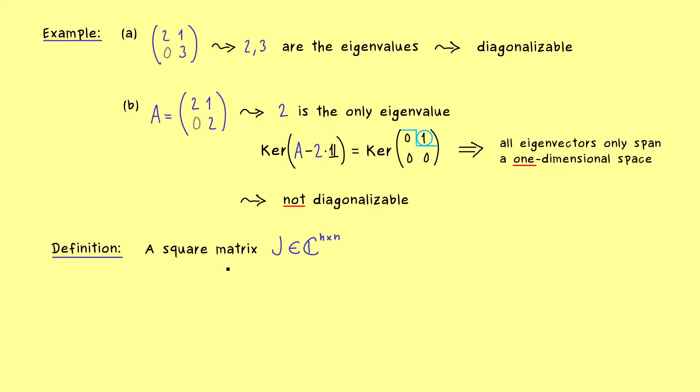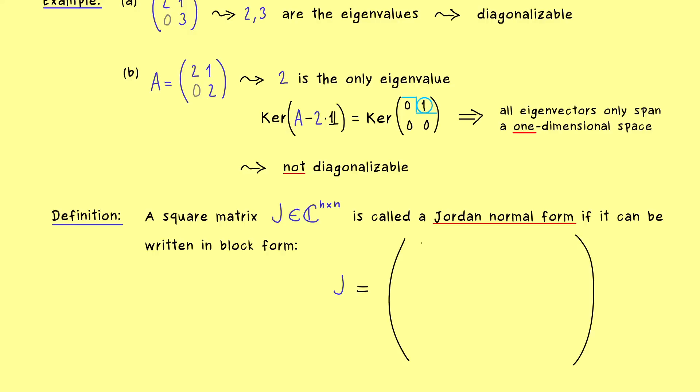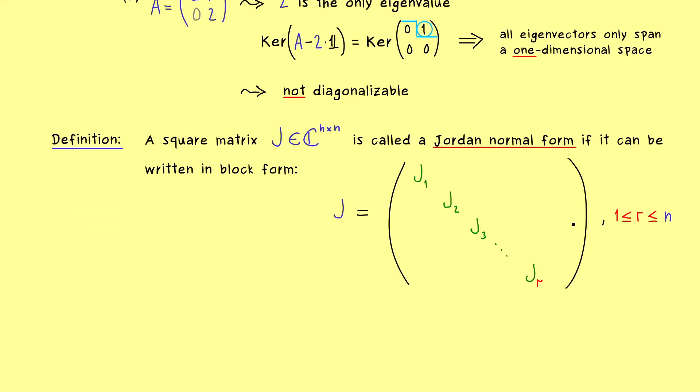And please never forget, here we always talk about square matrices over the complex numbers. And now we say that such a matrix is a Jordan Normal Form if it has a very special structure. Indeed it should be possible to decompose J into blocks. This means we can write smaller square matrices J_1, J_2 and so on on the diagonal. And let's say the last index we choose here is a lowercase r. This means this natural number r lies between 1 and n. Now obviously the sizes of these blocks could be different, but in total they should fill up the whole n times n matrix J. And moreover these square matrices J_i are called Jordan blocks.